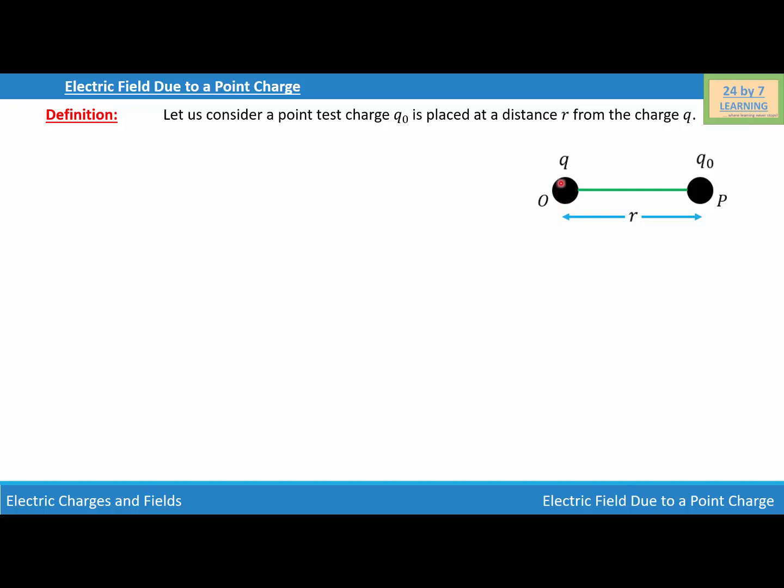Here is my figure where you can see charge Q is placed at point O and charge Q₀ is placed at point P. The distance between charge Q and Q₀ is R.